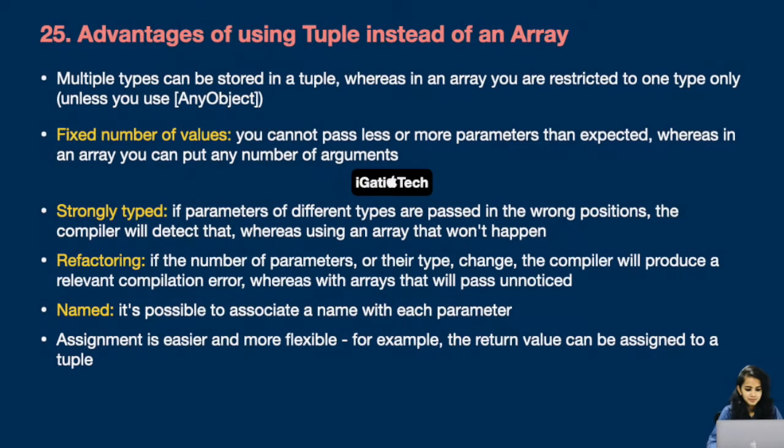Next question: Advantages of using tuples instead of arrays. Multiple types can be stored in a tuple, whereas in an array you are restricted to one type unless you use AnyObject. Tuples have a fixed number of values — you cannot pass fewer or more parameters than expected. Tuples are strongly typed — if parameters of different types are passed in wrong positions, the compiler will detect it. Refactoring is easier: if the number or type of parameters change, the compiler produces a compilation error. It's also possible to associate names with each parameter and assignment is more flexible.